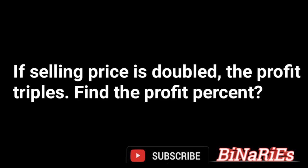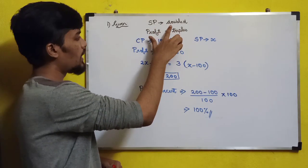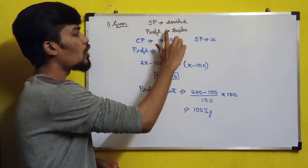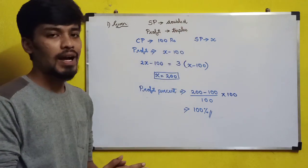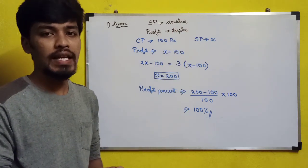First question: if the selling price gets double, the profit gets triple. What is the profit percentage? If selling price is doubled, then profit is tripled.